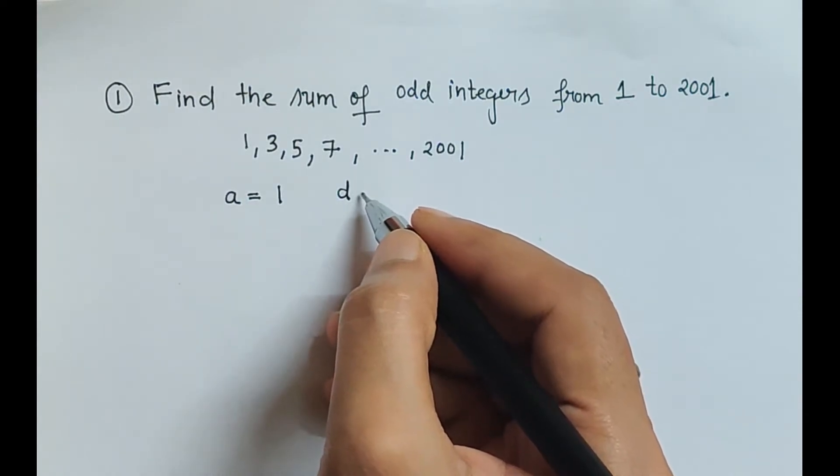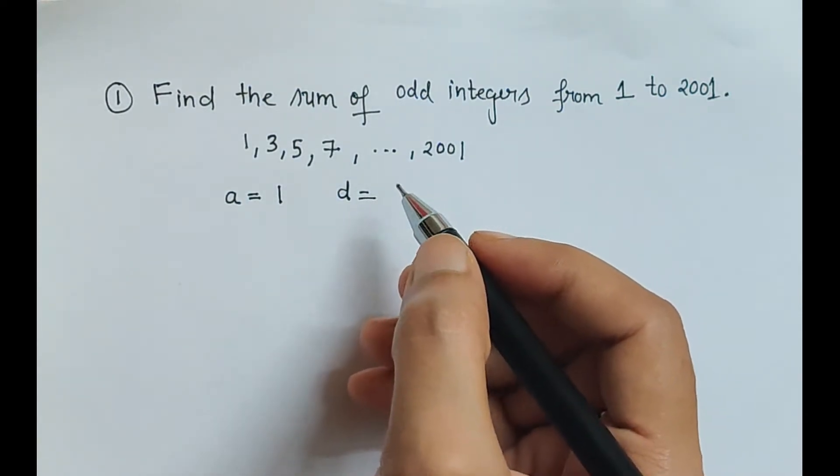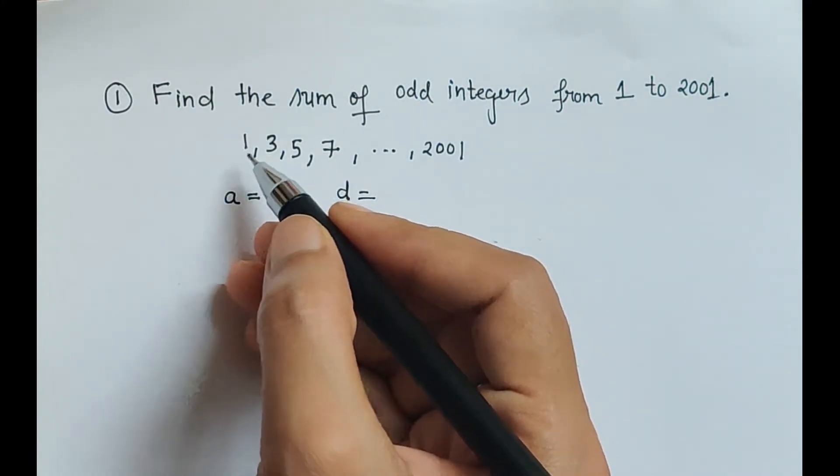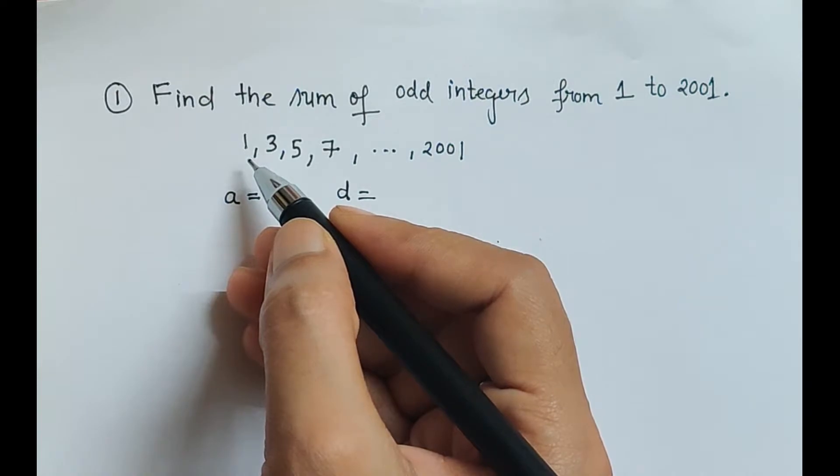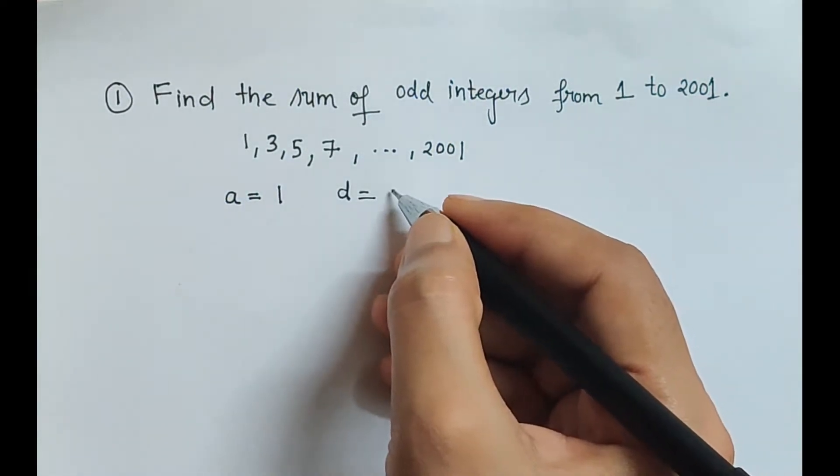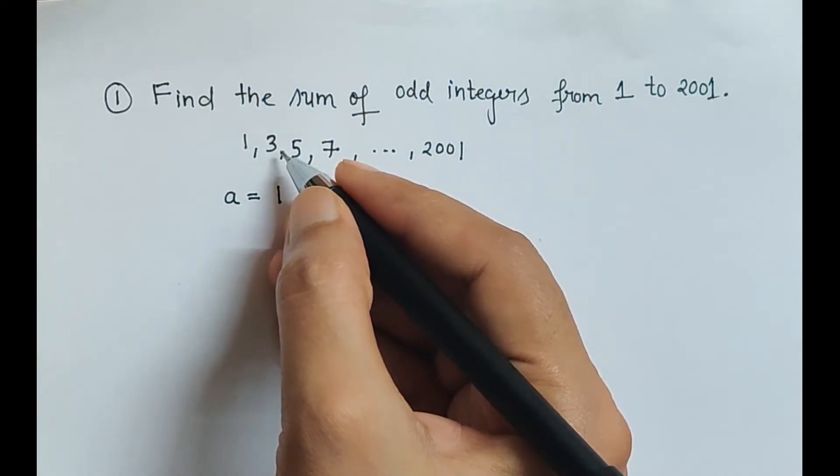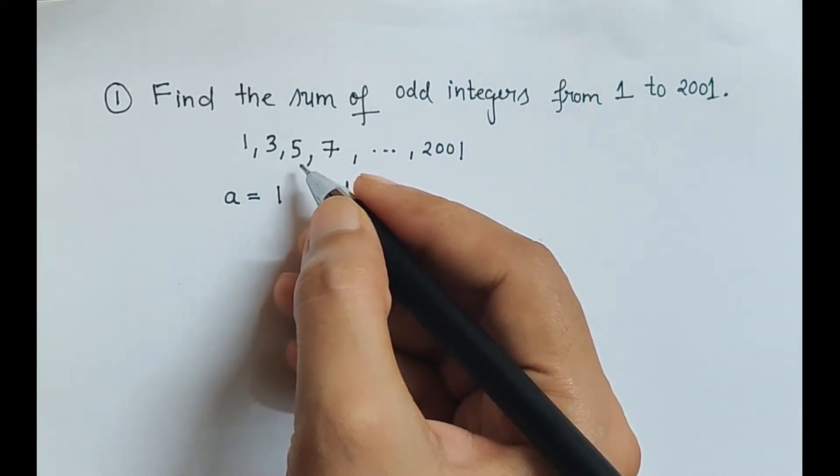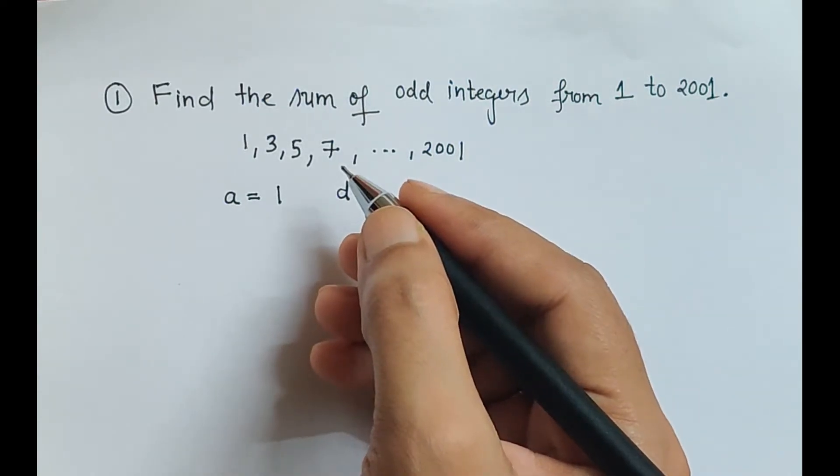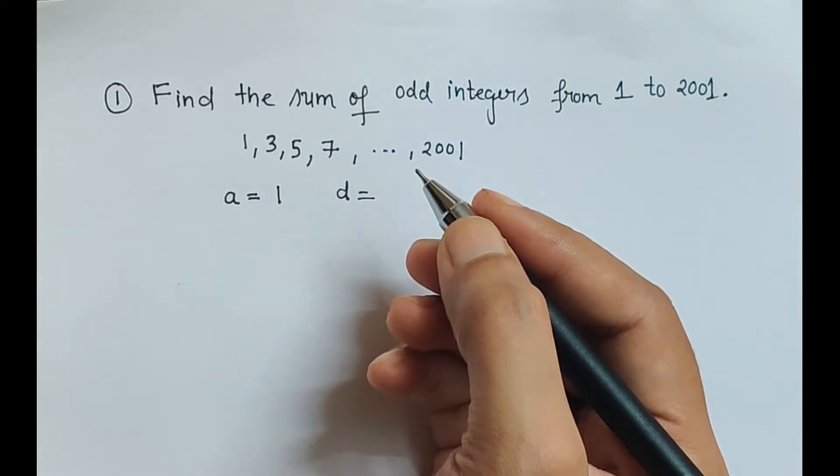Next important term is d which is common difference. Common difference is nothing but the difference between any term from its successive term, that is 3 minus 1 is 2, 5 minus 3 is 2, 7 minus 5 is 2. That means whichever term we take and the previous term when it is subtracted from it we get a constant number, therefore it is an arithmetic progression.